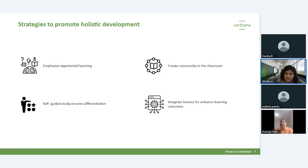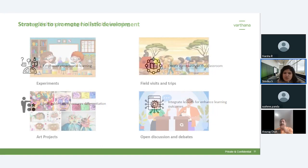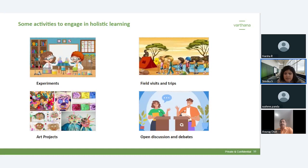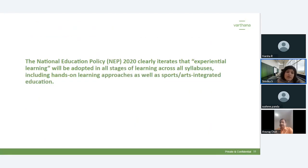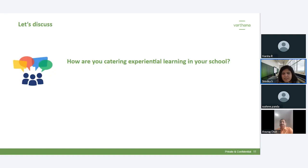Some activities to engage in these strategies include experiments, field visits and trips, art projects, open discussions and debates. NEP also talks a lot about experiential learning and building a holistic classroom — the emphasis is clearly on adapting experiential learning at different stages across all syllabi and including a lot of hands-on learning approaches. I'd like to hear from you: how are you catering to experiential learning in your school? What setup do you have?